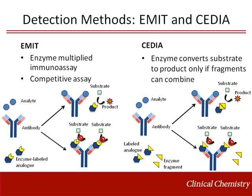The cloned enzyme-donor immunoassay, or CEDIA, uses genetically engineered inactive fragments of beta-galactosidase. One fragment is bound to an analog, and if the test antibody binds the labeled antigen, reformation of the enzyme fragments is inhibited. Conversely, if the labeled antigen does not interact with the antibody, as is the case with high concentration of the analyte in the sample, the enzyme fragments recombine and produce product from provided substrate.